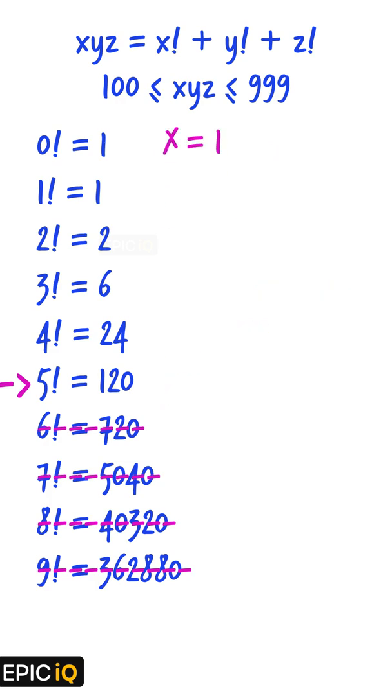So, x is 1, and one of the letters y or z must have a value of 5. We have two possibilities. If y is equal to 5, then the number will be 15z. And if z is equal to 5, then the number will be 1y5.